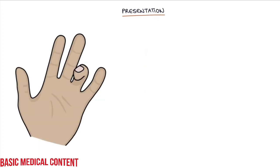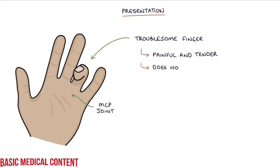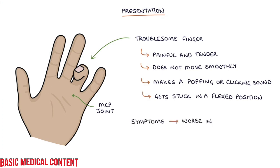Let's move on to the presentation. The typical presentation is with a troublesome finger that is painful and tender, usually around the MCP joint on the palm side of the hand. It does not move smoothly through flexion and extension, makes a popping or clicking sound, and gets stuck in a flexed position. Symptoms are typically worse in the morning and improve during the day.